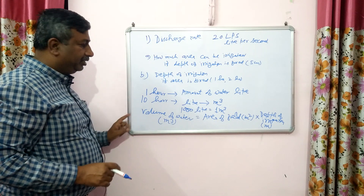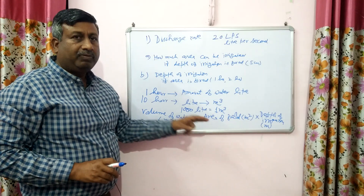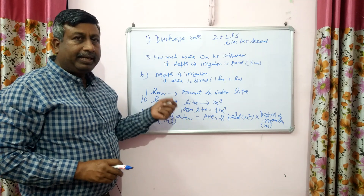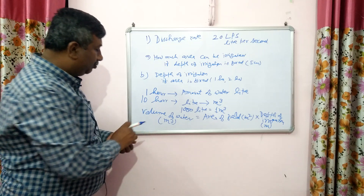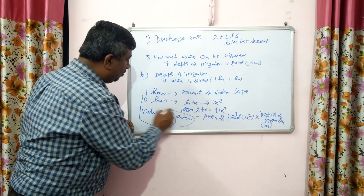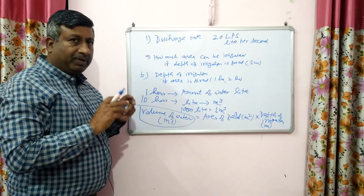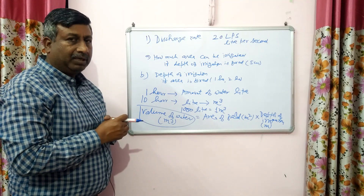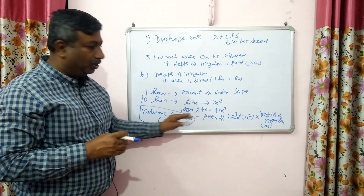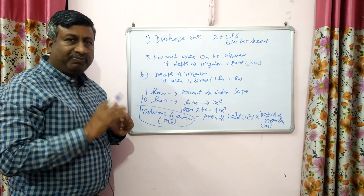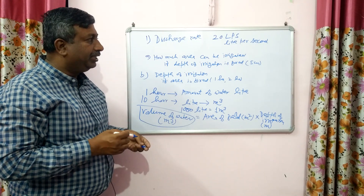With the help of this formula, if the depth of irrigation is given then we can calculate the area which can be irrigated, and if the area of the field is given then we can calculate the depth of irrigation. First find out the volume of water, then apply this formula: volume of water equals area of field multiplied by depth of irrigation.